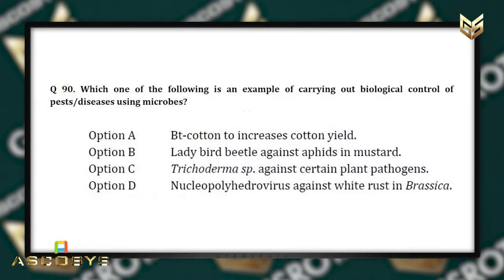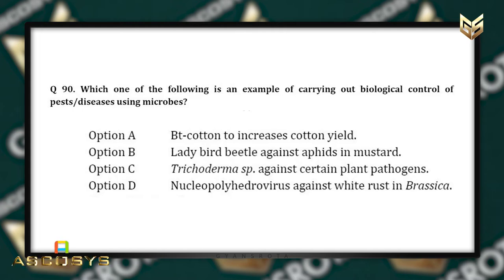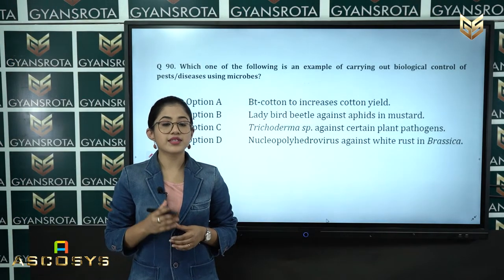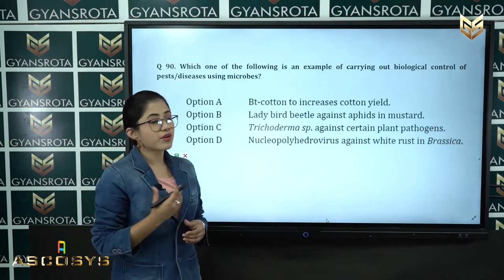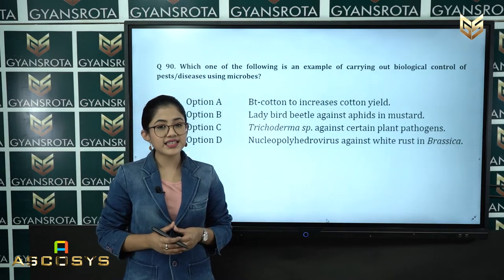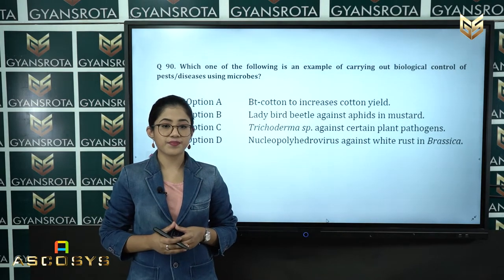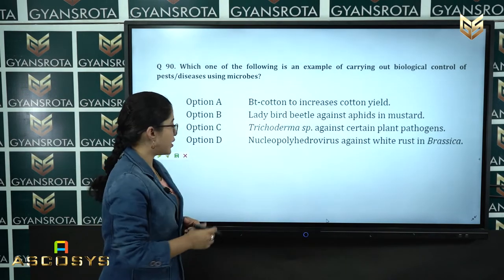Question number 90: Which one of the following is an example of biological control of pests or diseases using microbes? Option A: BT cotton to increase cotton yield. Option B: ladybird beetle against aphids in mustard. Option C: Trichoderma species against certain plant pathogens. Option D: nucleopolyhydrovirus against white rust in Brassica. The correct answer is option C — Trichoderma species, which works against certain plant pathogens. This is from the chapter biotechnology and its applications.